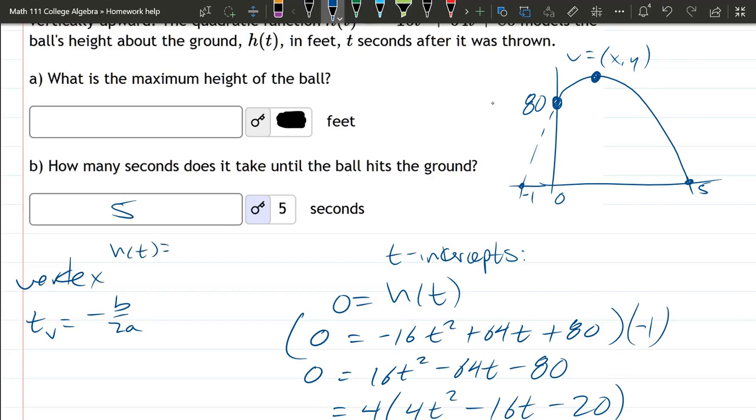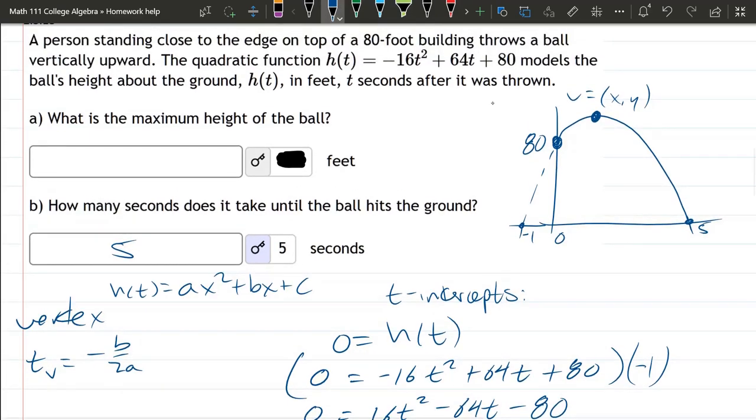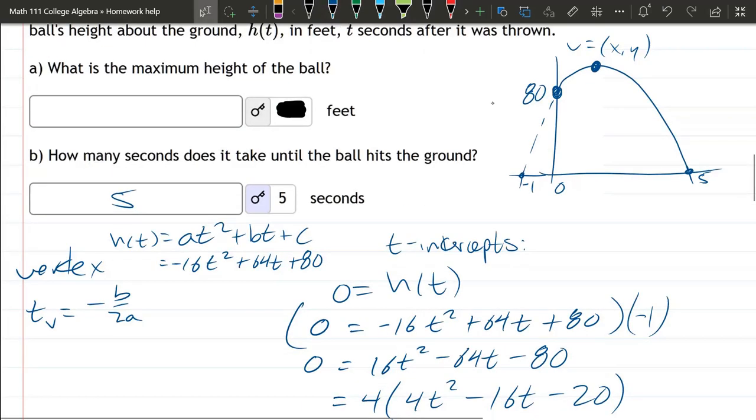And our h(t) is at squared plus bt plus c. So for us, negative 16, and I keep writing x's instead of t's. So negative 16t squared plus 64t plus 80. So you can see right here, a is negative 16, b is positive 64, c is positive 80. And now we can plug in the values here.